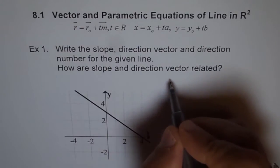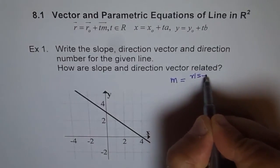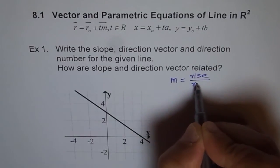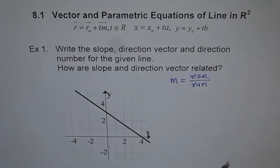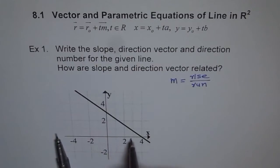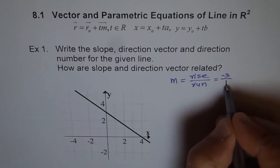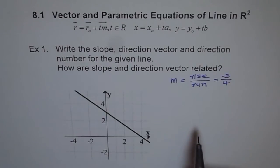Slope of the line is rise over run, so let's write slope m equals rise over run. If you see this line, the rise is negative 3 and the run is positive 4. So rise over run is negative 3 over positive 4, and therefore the slope of the line is minus 3 over 4. That's how we get the slope of our line.